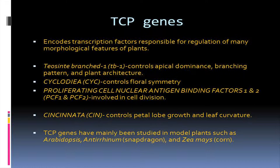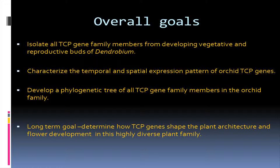These TCP genes have mainly been studied in plants such as Arabidopsis, Antirrhinum, and Zea mays, and not so much in orchids, which is why we are interested in them. The overall goals for this research project were to isolate as many TCP genes as we could from our dendrobium plant, put those genes into an expression pattern to see where they're being expressed and how intensely, and develop a phylogenetic tree — all contributing to the long-term goal of determining how TCP genes shape plant architecture and floral development in orchids.